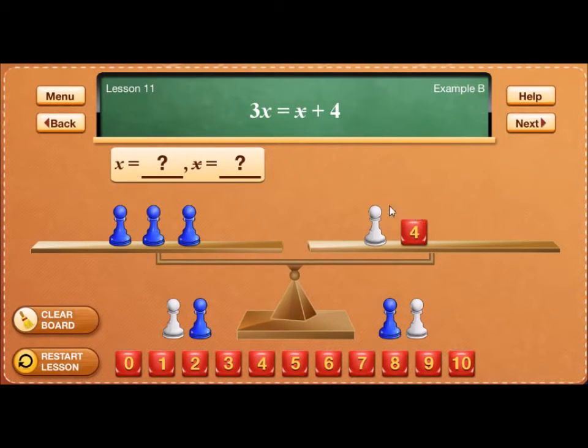In order to solve this problem, I would like to eliminate this white pawn. I'm going to do that by adding a blue pawn to each side of the scale. That's the addition property of equality.